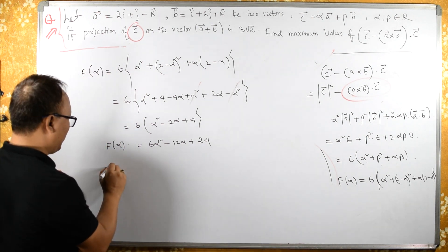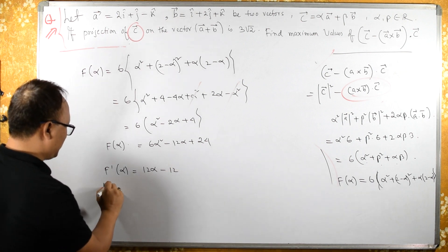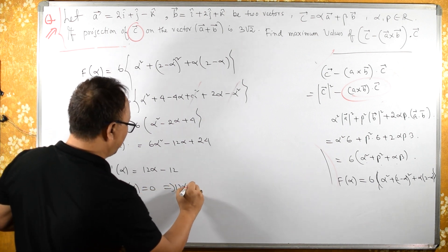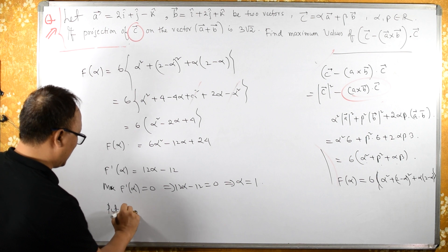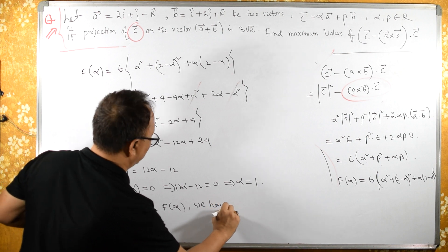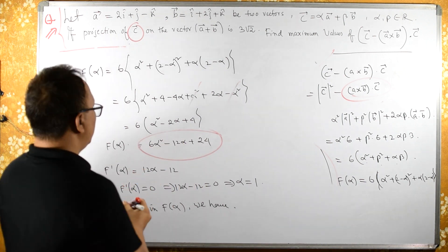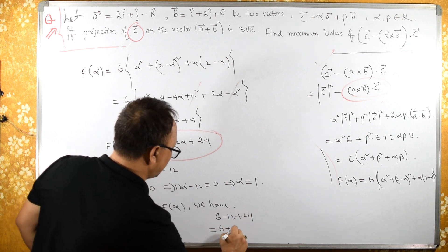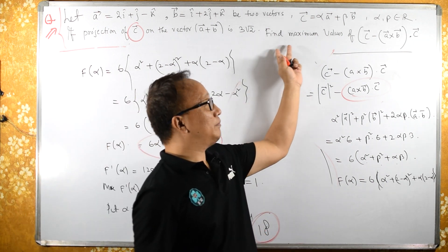In order to find the maximum, we differentiate: f'(α) = 12α − 12. Setting f'(α) = 0 gives 12α − 12 = 0, so α = 1. Substituting α = 1 into f(α): 6(1) − 12(1) + 24 = 6 − 12 + 24 = 18. Therefore 18 is the maximum value.